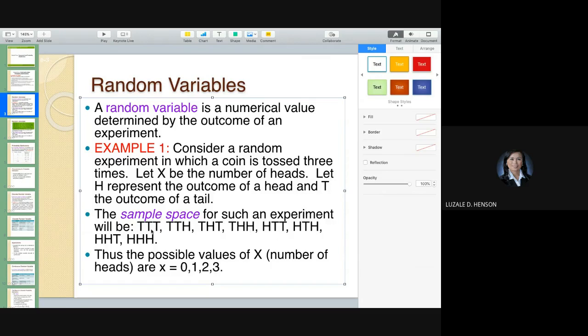How many sample space? One, two, three, four, five, six, seven, eight. Eight outcomes in the sample space. Thus, the possible values of X, which is referring to the random variable that you have. X may be equal to zero, meaning there's no head, one possible outcome. There may be one, only one head. There may be two heads.